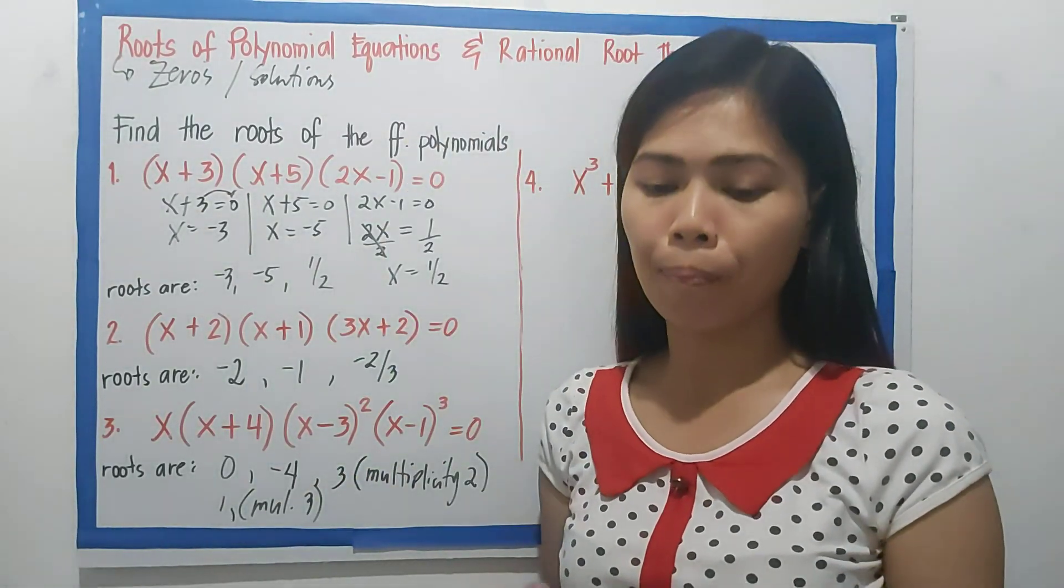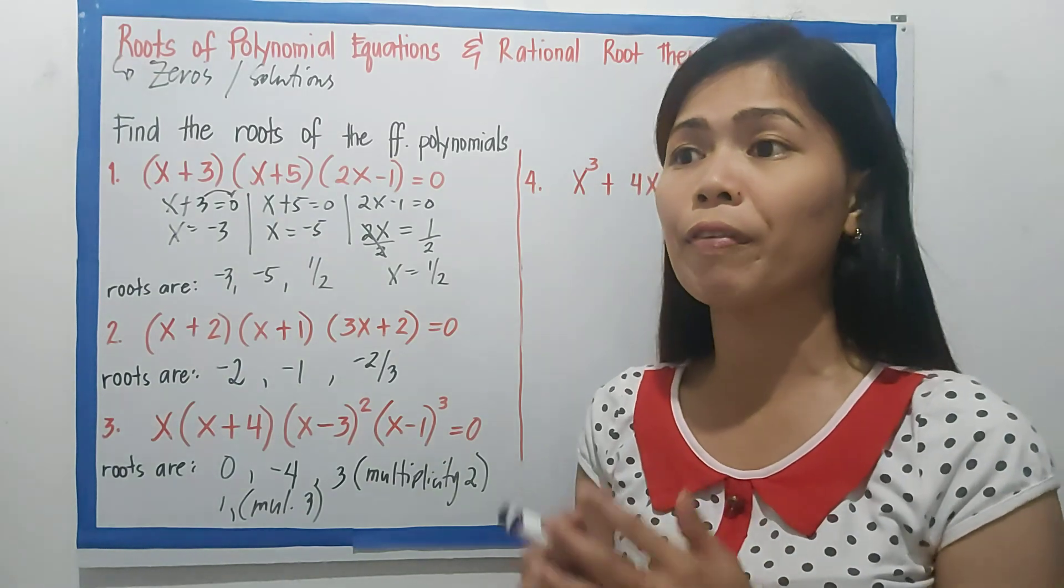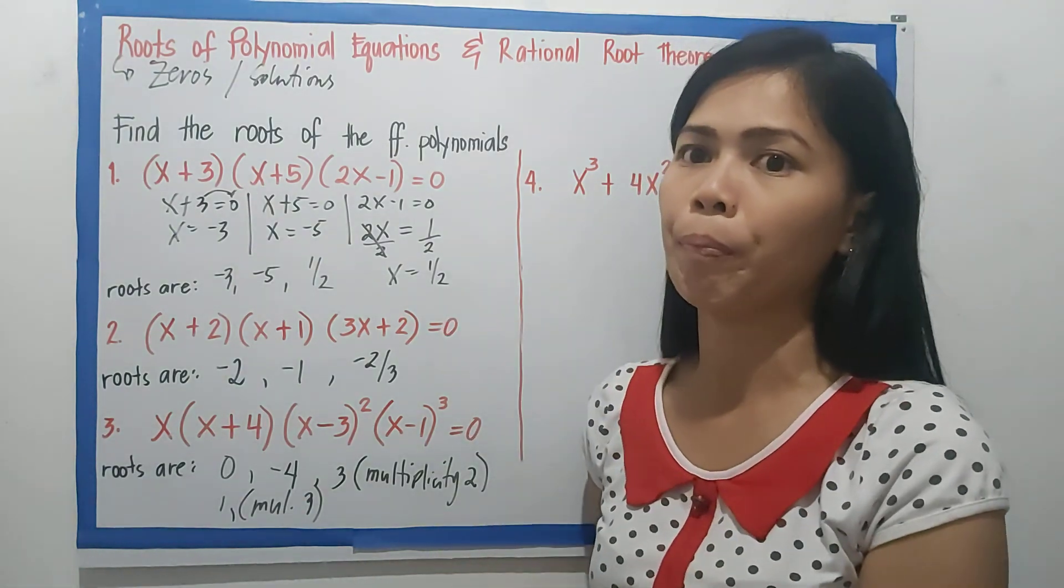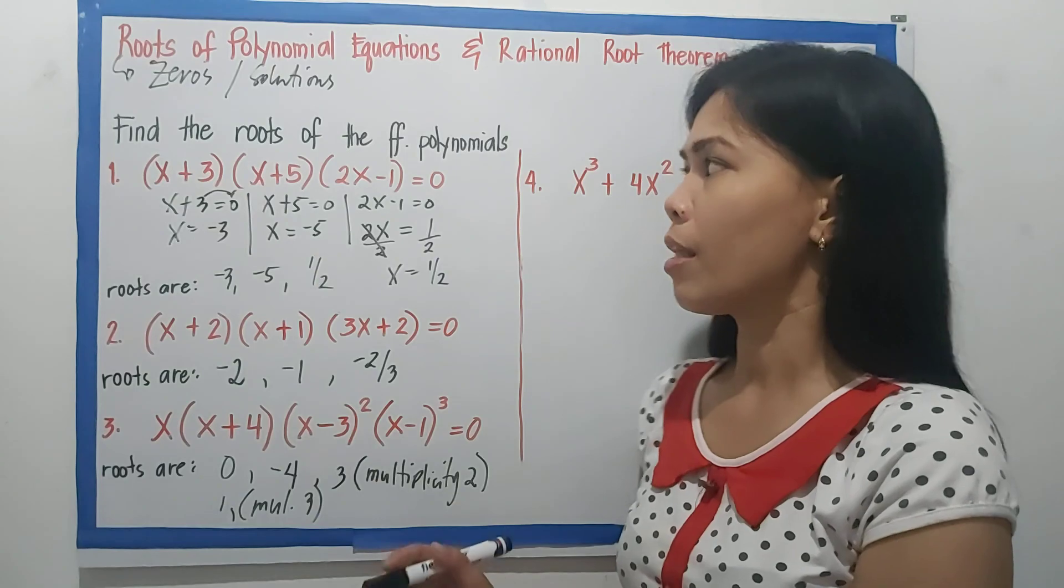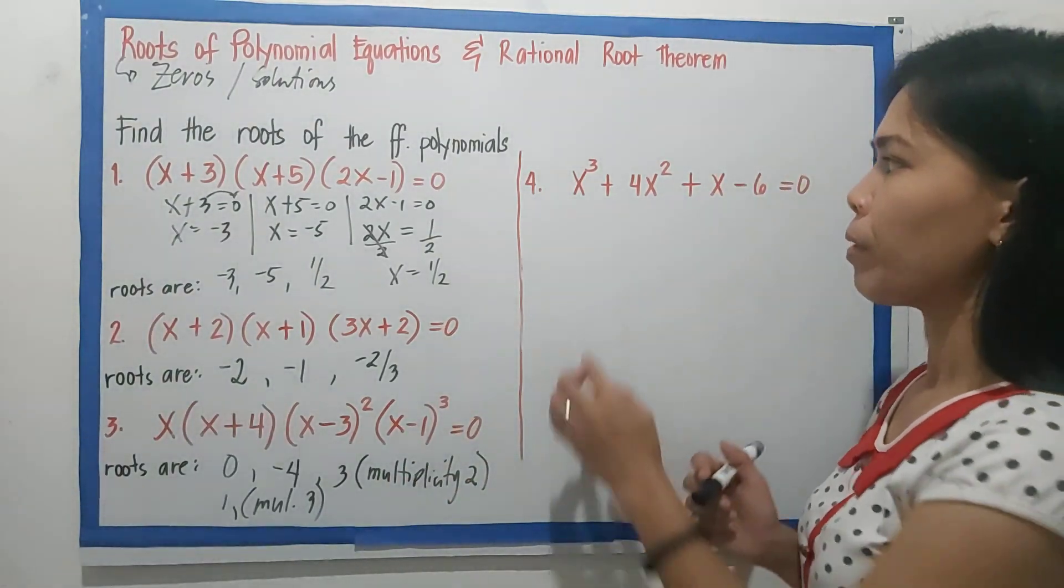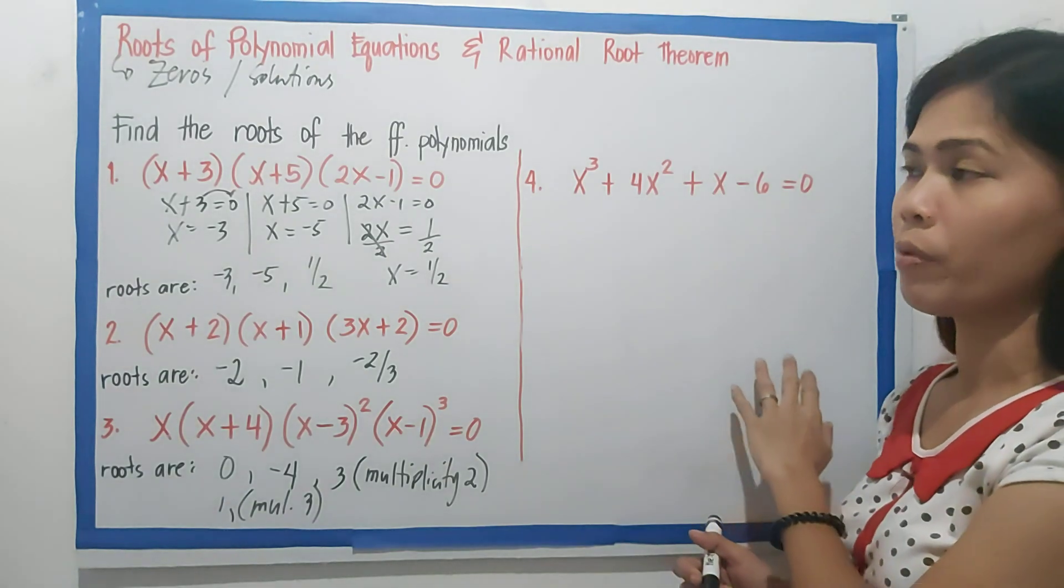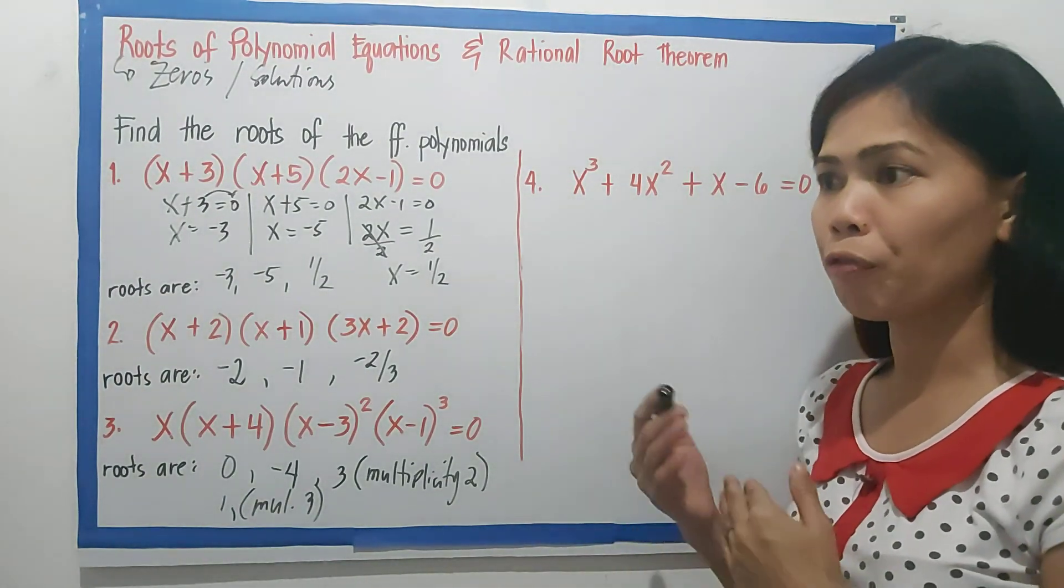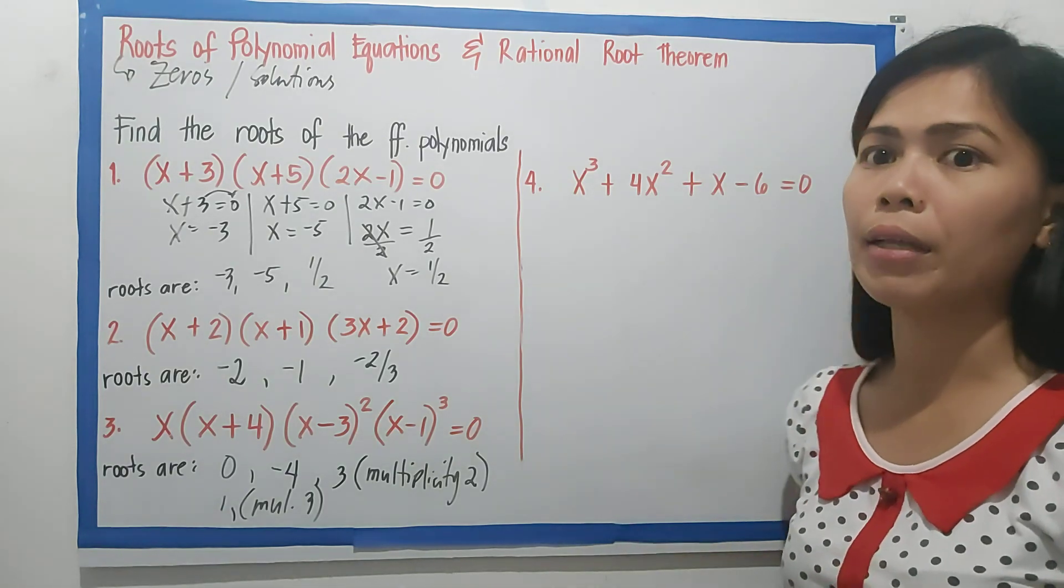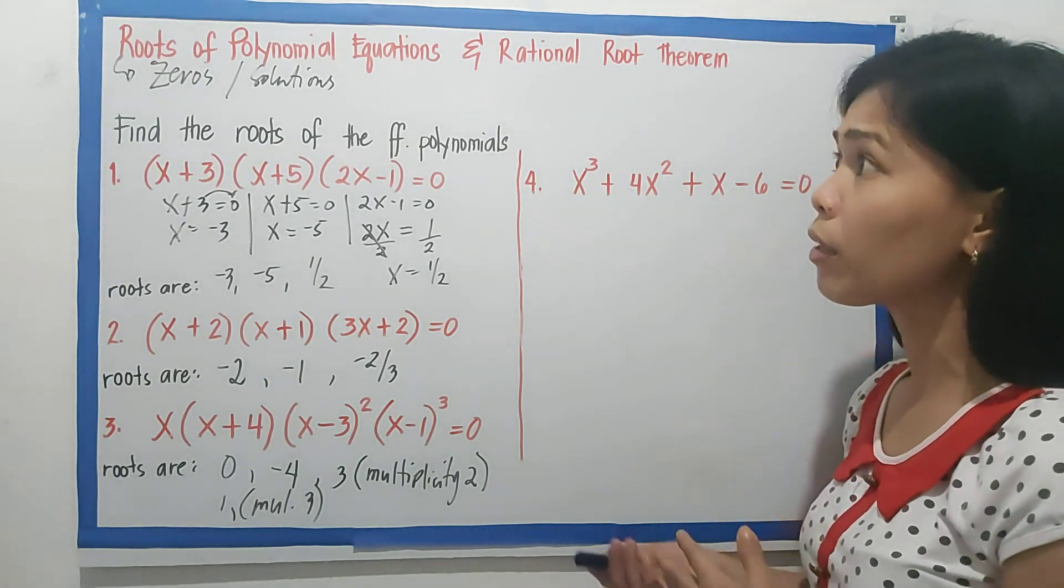That's all about roots of polynomial equations if it is written in factored form. Now let's move on to number 4. x³+4x²+x-6=0. So this is written in standard form. So to find the roots, we have to find the factors.